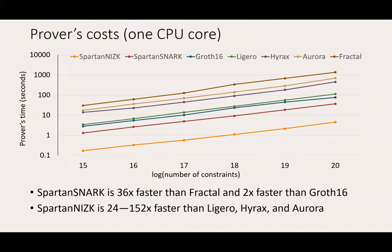Here is a graph depicting the prover's cost for SPARTAN and its baselines. For SPARTAN, we depict two variants: the NISC variant and the SNARK variant. The key takeaway is that SPARTAN offers the fastest prover, with speedups varying from a factor of 2 to 2 orders of magnitude.